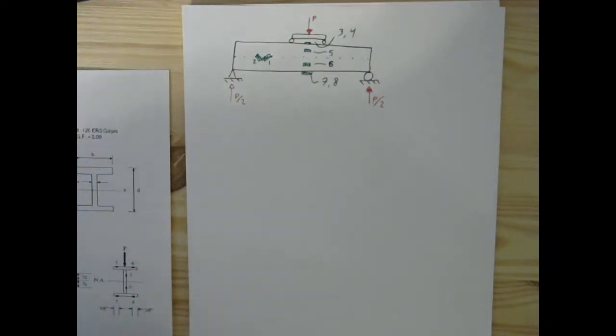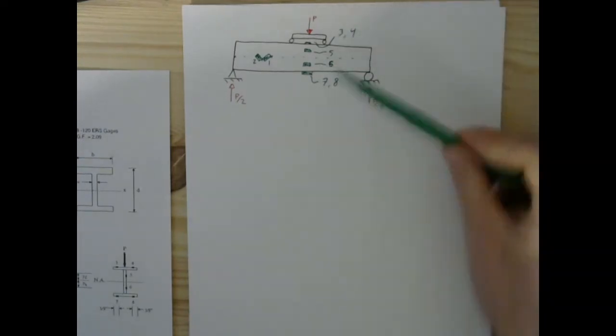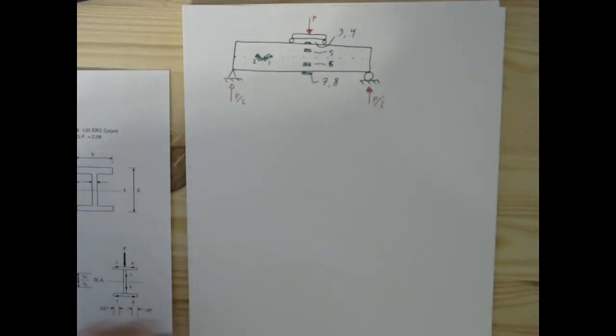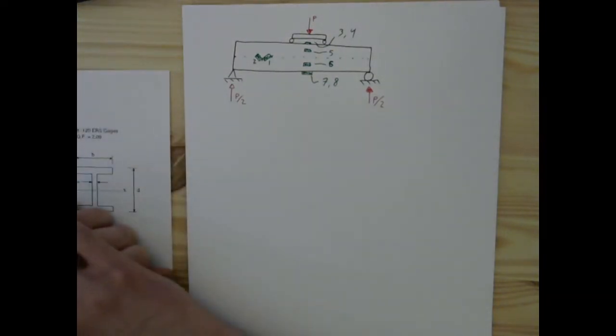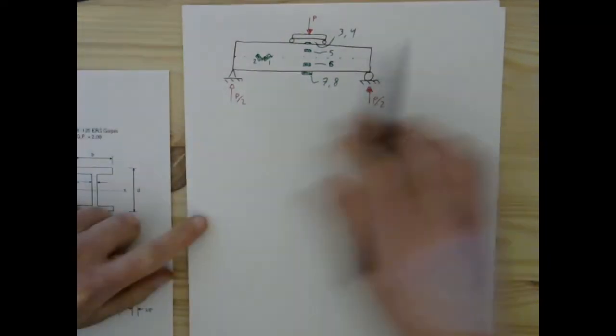We're going to want to check our theoretical values for the strain of this beam against the measured values of strains for this beam. So in order to do that, we're going to need to look at the shear and bending moment diagrams for this simple bending.